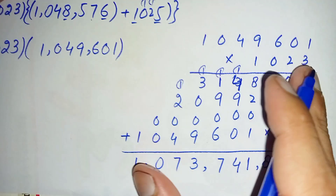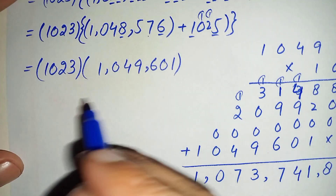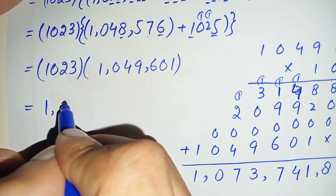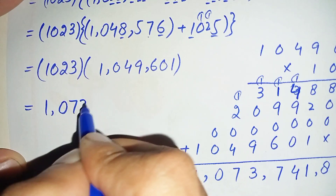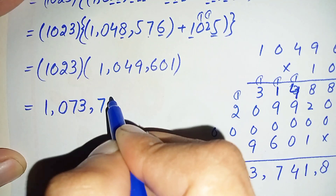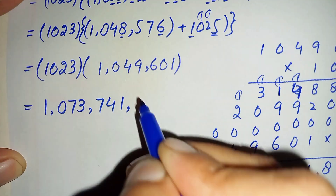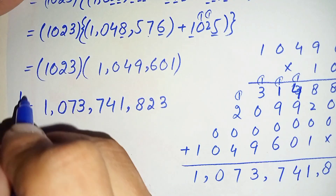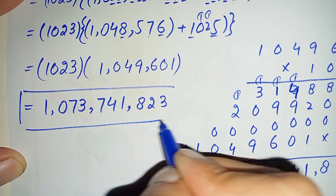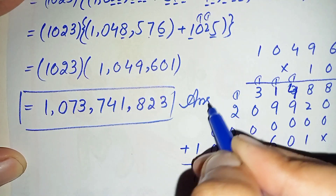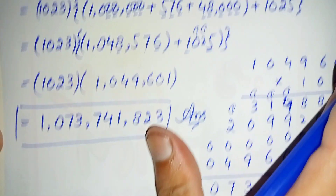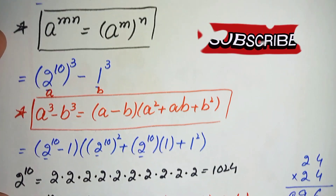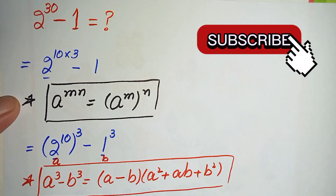So finally the product of these two numbers gives us 1 billion, 73 million, 741 thousand, 823. This is our final answer and the final value of this impossible and very hard math problem. If you like this video, don't forget to subscribe to my YouTube channel. Thanks for watching!